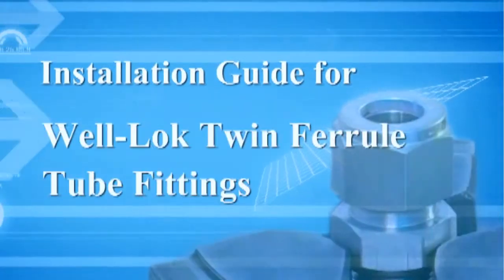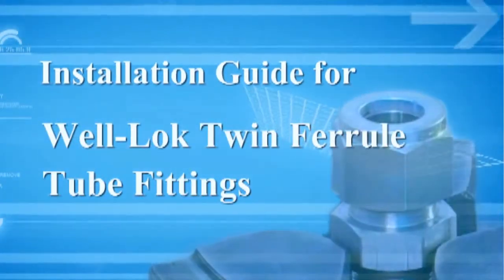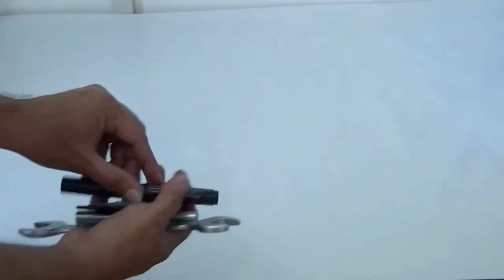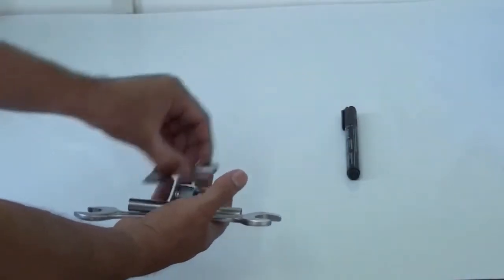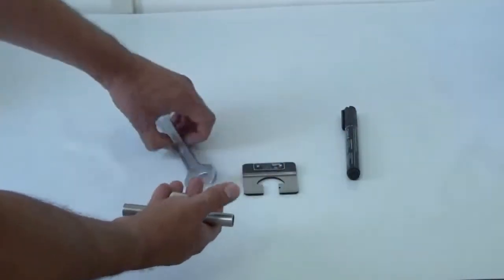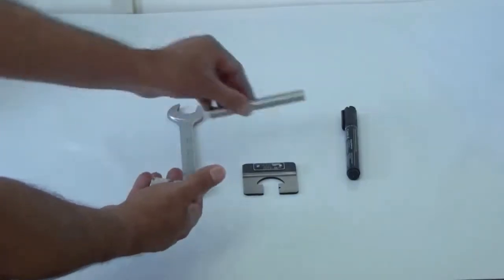Installation Guide for Well-Lock Twin Ferrule Tube Fittings. You will need a marker, a Well-Lock inspection gauge, and a standard wrench to complete the installation properly.